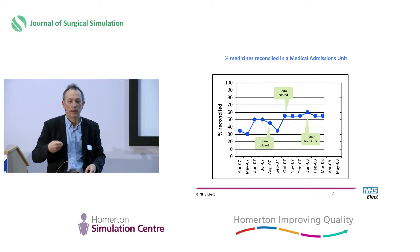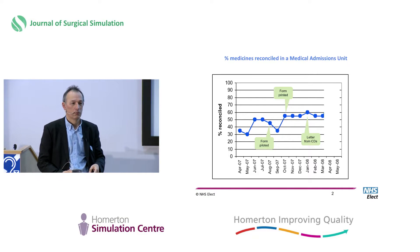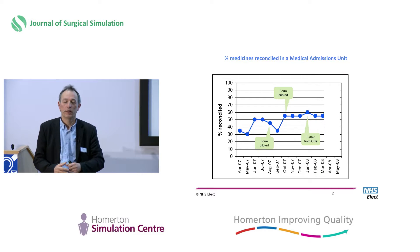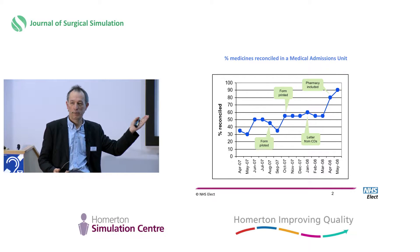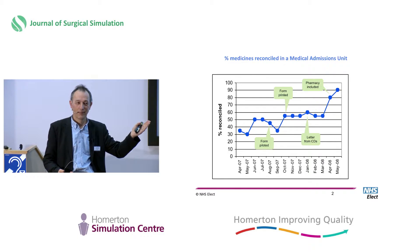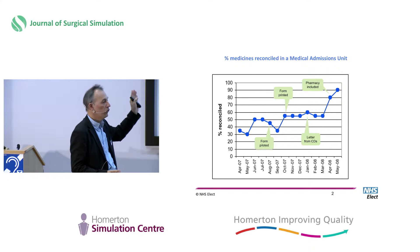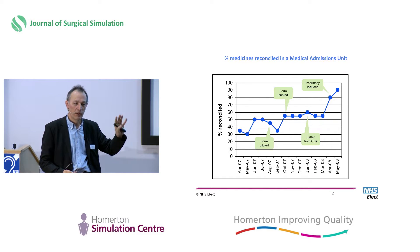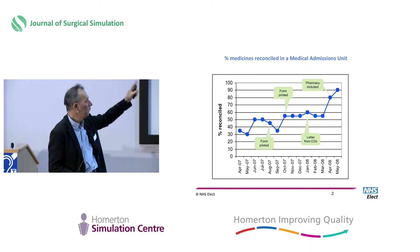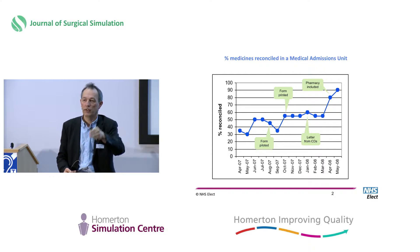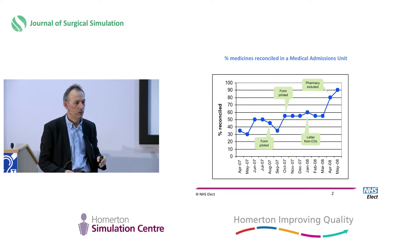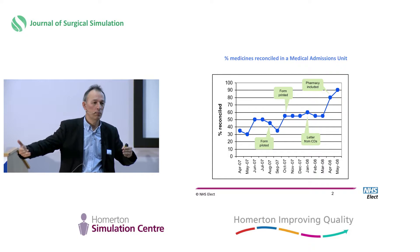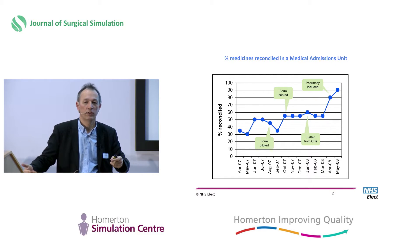So they did something else. They put in a backstop that, in theory, shouldn't be necessary. But when they included pharmacy to come and do a second check, look what happened. What I've just done is used a very simple line graph to tell you the story of that improvement. I've added little speech bubbles to say what change was made and when it was made. And that's the power of the time series — it shows you what's going on over that time period and what impact the different changes have made.